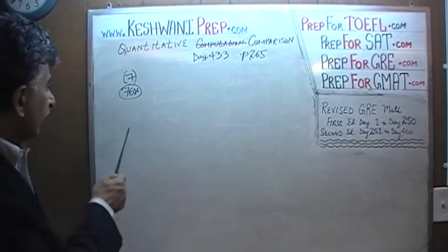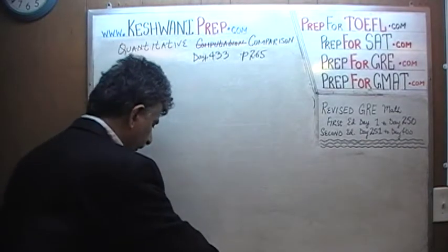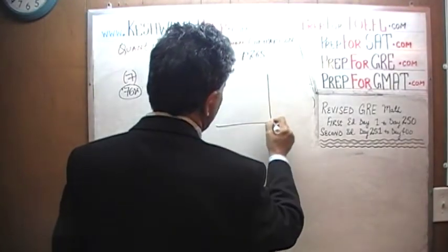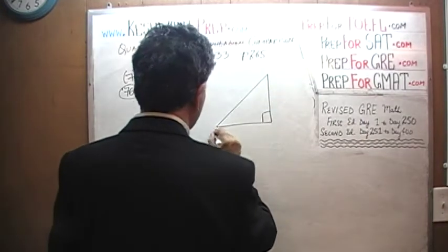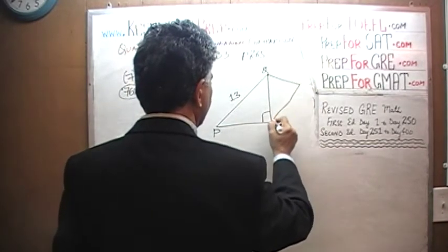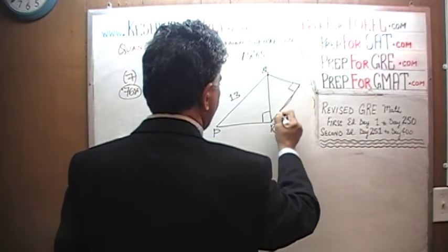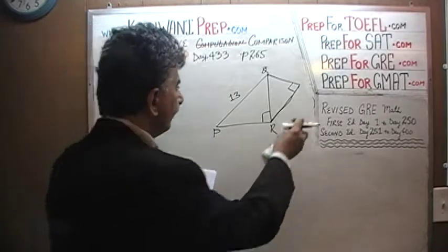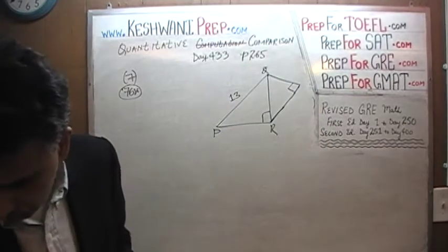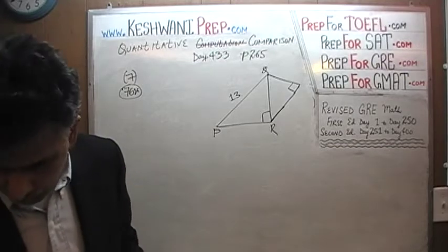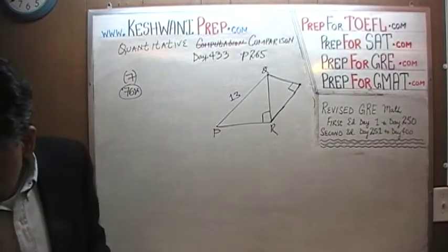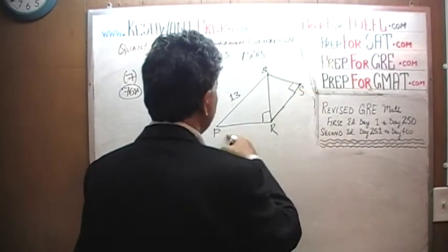Problem number 7 — when it appeared on the exam, 76% of the people got it right. It is a geometry question. We are given a picture with a right angle triangle PQR, where the hypotenuse is 13, and another right angle triangle. The second triangle doesn't have a name in the book, so we'll christen it — let's call it S, making it PQRS.